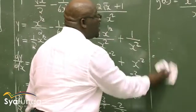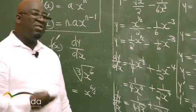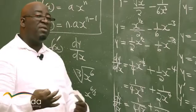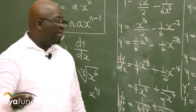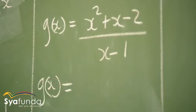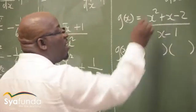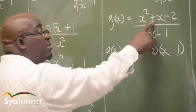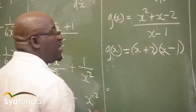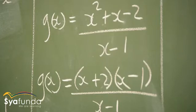The last problem takes us back to grade 8 factorization. If you cannot factorize, you have a problem — every chapter requires factorization and multiplication. Here g(x) has a trinomial numerator over (x − 1). We factorize the numerator: factors of x² are x and x; factors of 2 are 2 and 1. With the signs, this factorizes neatly, and (x − 1) cancels, leaving g(x) = x + 2.